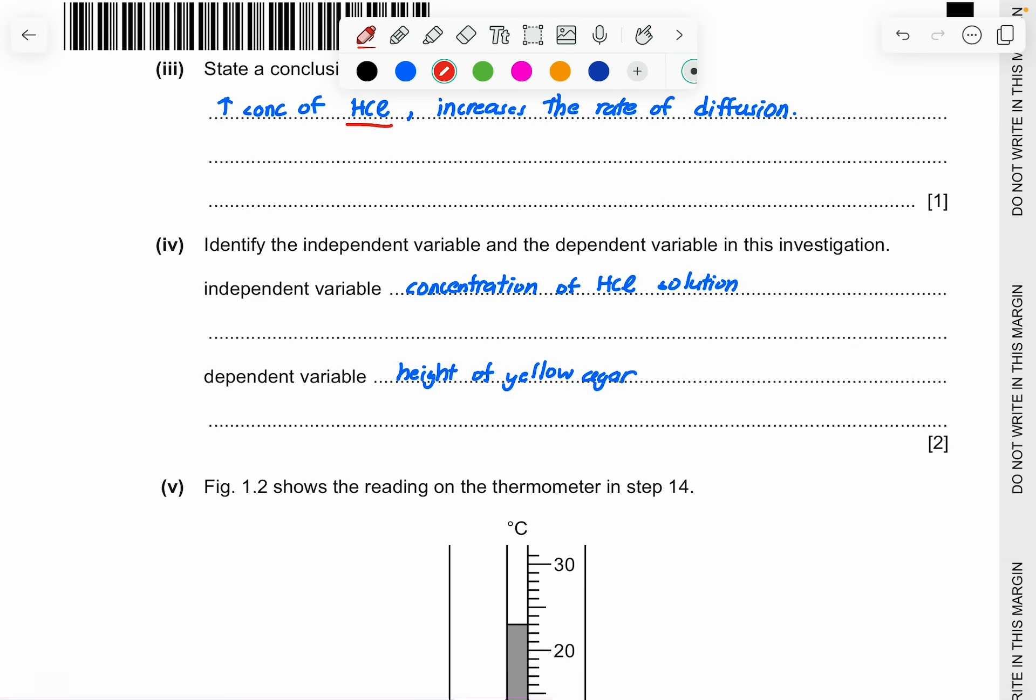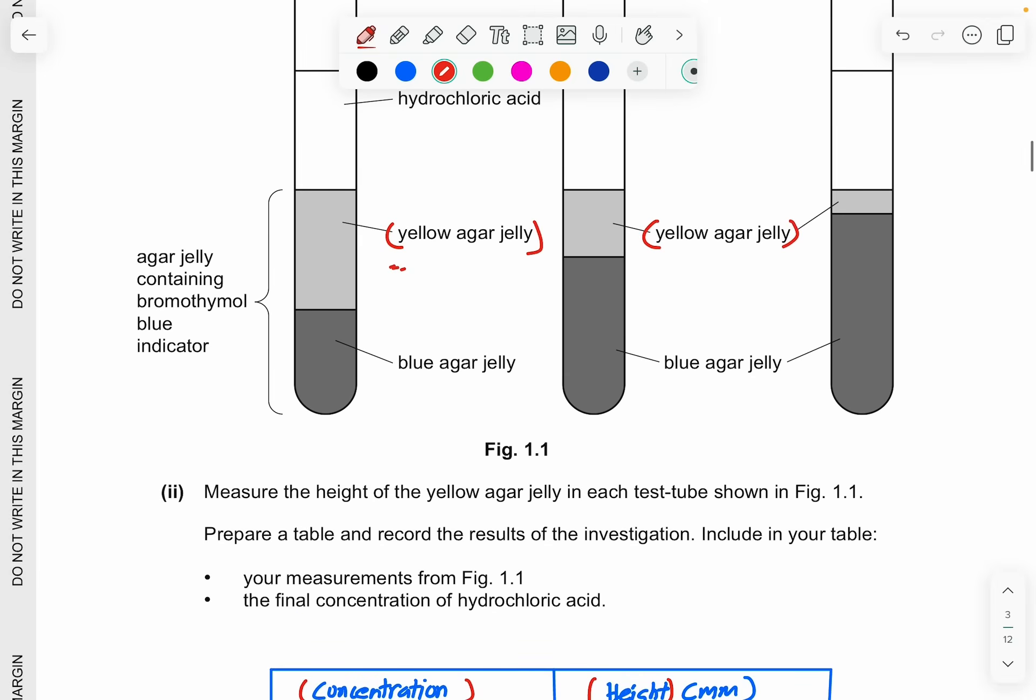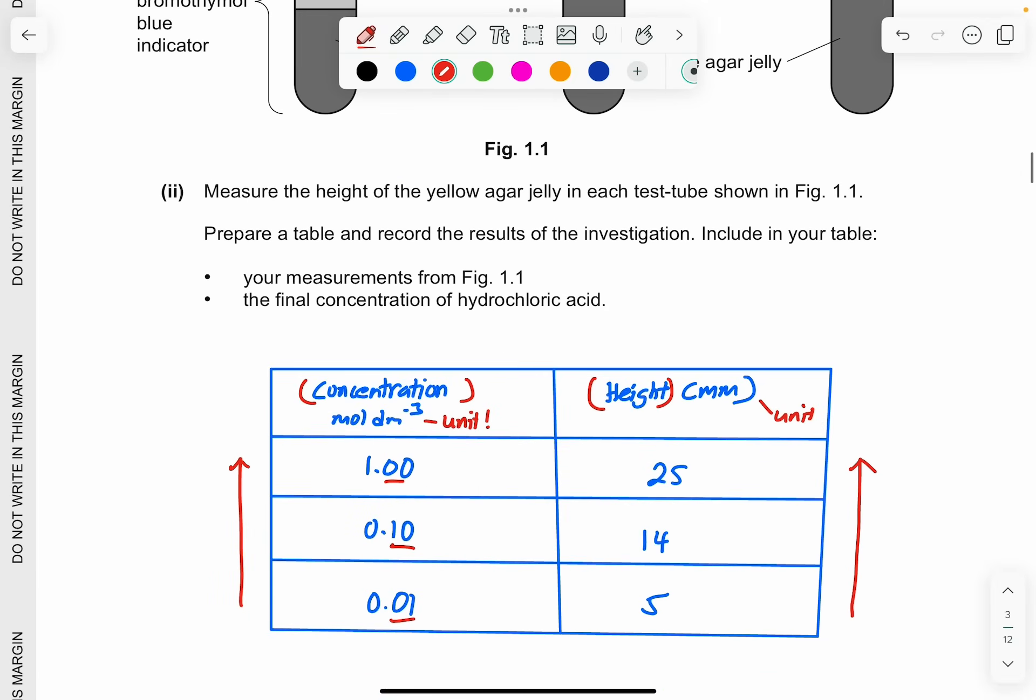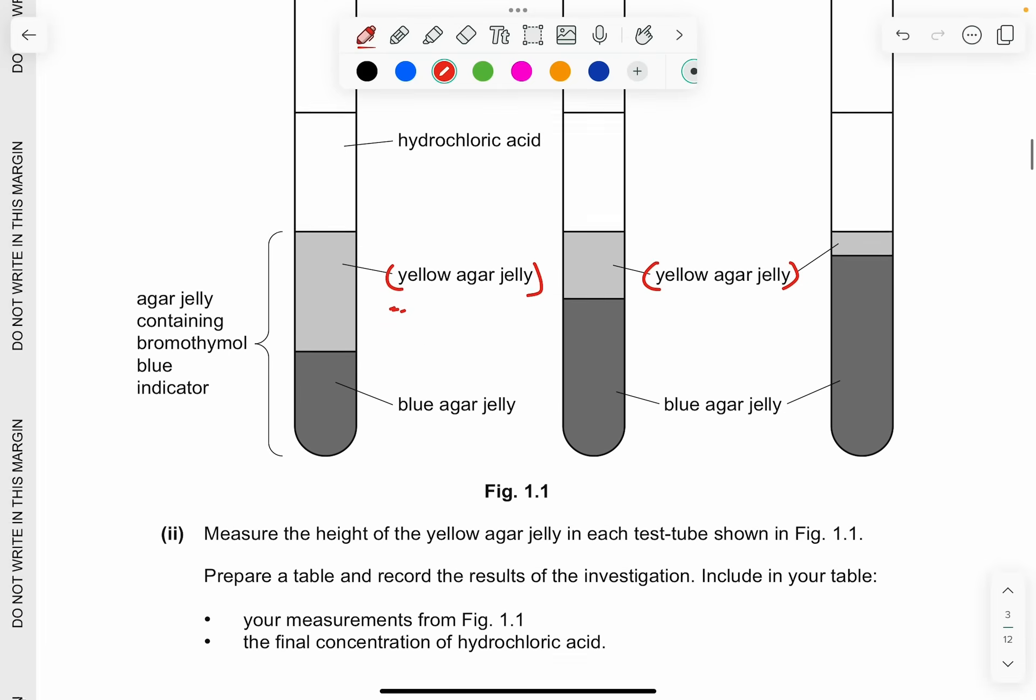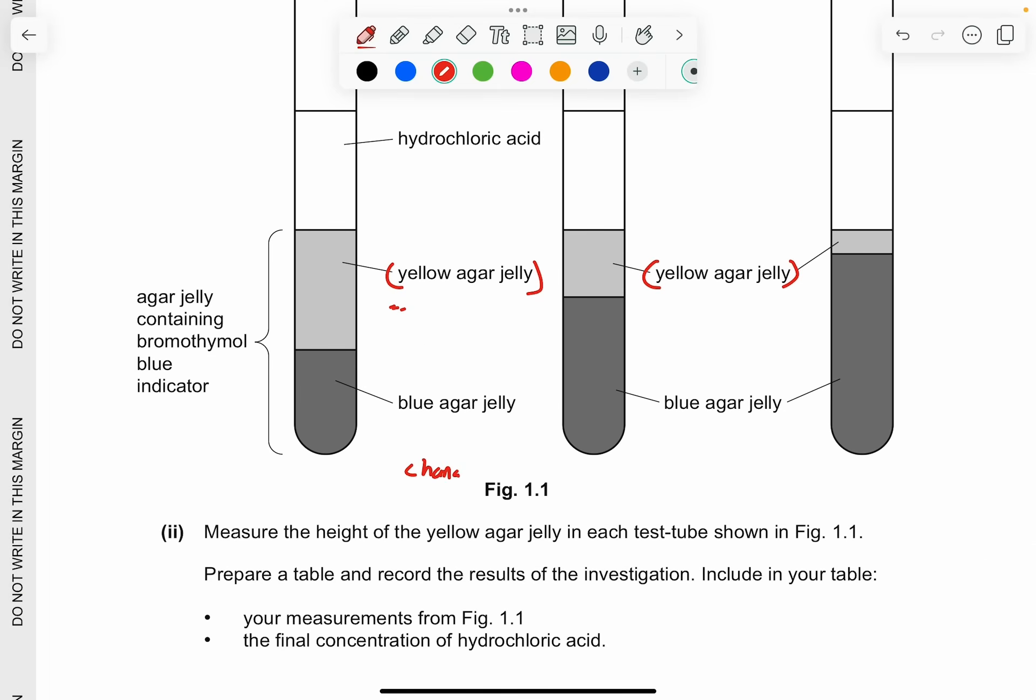Part 4, identify the independent variable and the dependent variable of this investigation. So the independent variable as we mentioned is the concentration of the HCl solution. Or you can say concentration of the acid. That's also acceptable. Dependent variable is to measure either the rate of diffusion or more accurately is the height of the yellow agar. Because this is the one that is playing a different role when the change in concentration happens.